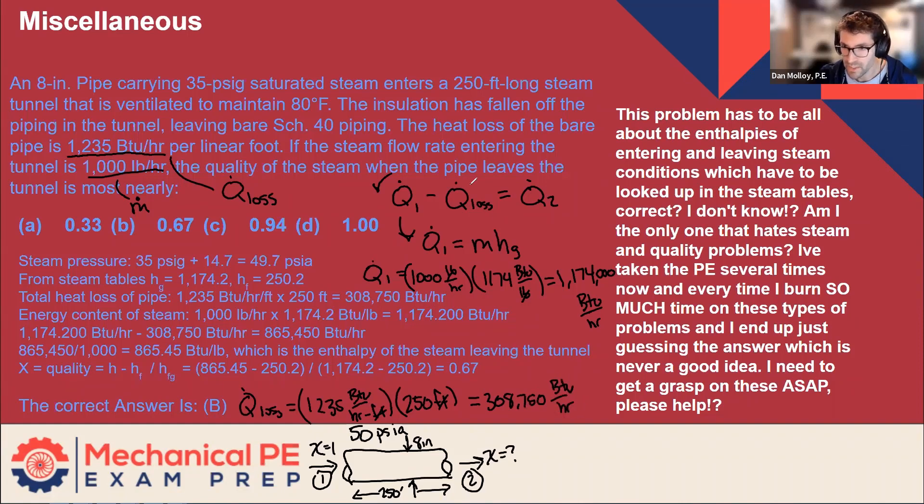So that's 308,000. And now this problem is starting to make sense. Q2 is going to be the difference between those two. So I'll spare you the subtraction. 1174 minus 308 is going to be 865. So Q2 then, Q dot 2, is 865,250 BTU per hour.